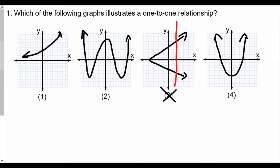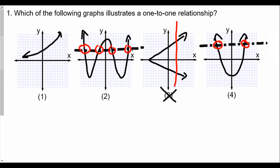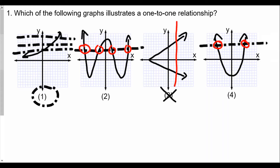Number three does not pass the vertical line test. For the other three graphs, if we draw a horizontal line, we see that for number four we get two points of intersection. For number two we get plenty — one, two, three, four — definitely not one-to-one. However, for graph number one, anywhere we draw a horizontal line, we only hit the graph once. So the answer — which is a one-to-one relationship — is choice one. Each value of x has its own value of y, and each value of y has only one value of x.